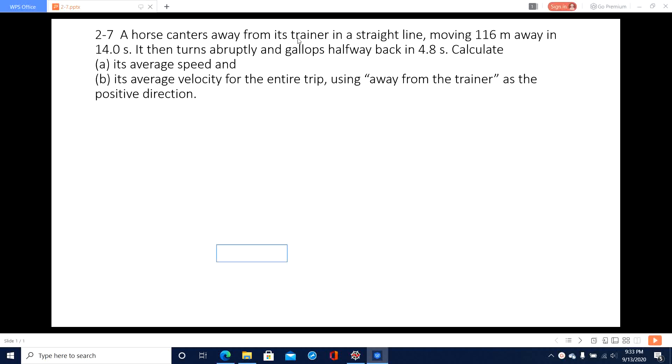So we draw a picture. In the straight line there is a trainer, right? And then it moves 116 meters away in 14 seconds. So we can write the distance covered as x1 and the time taken as t1.